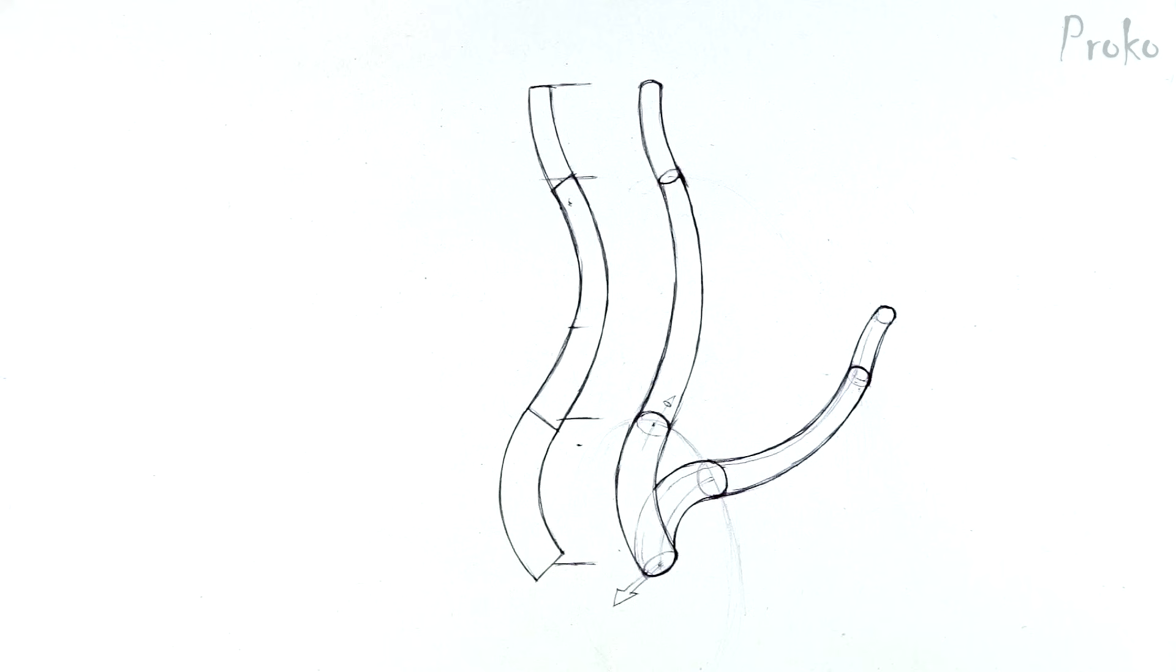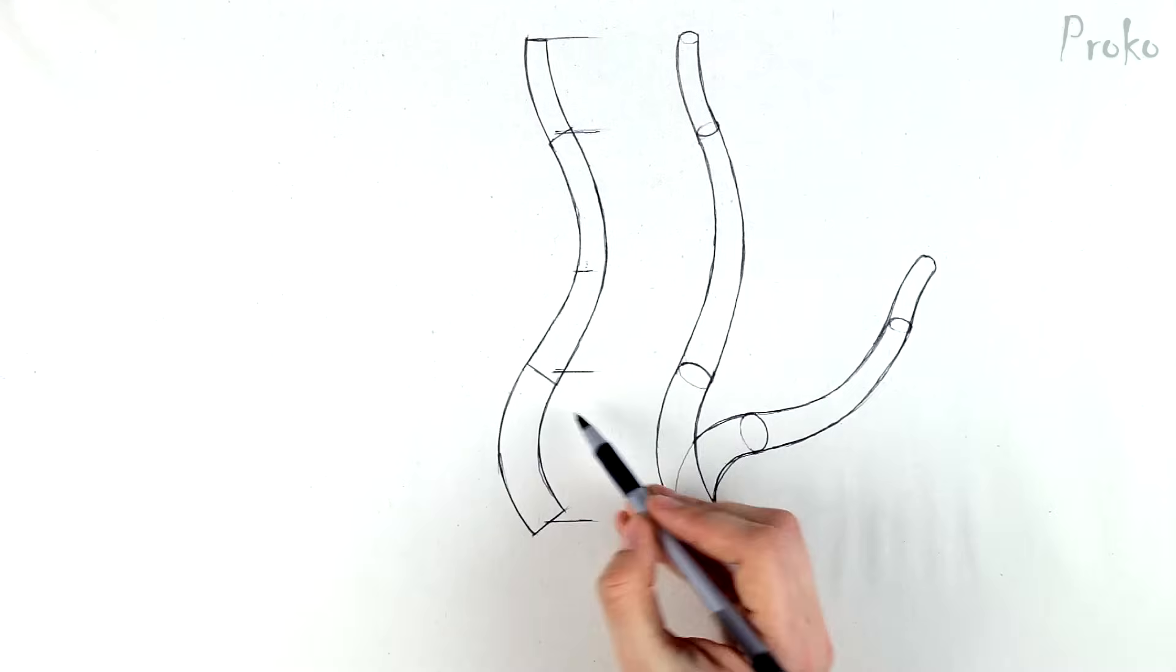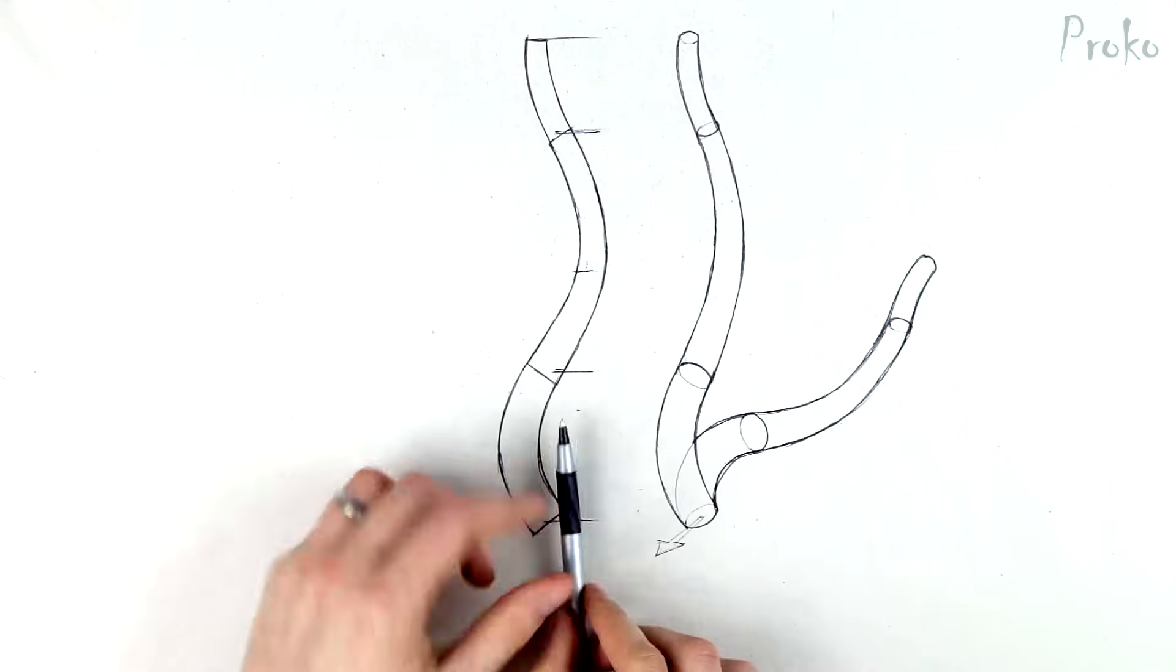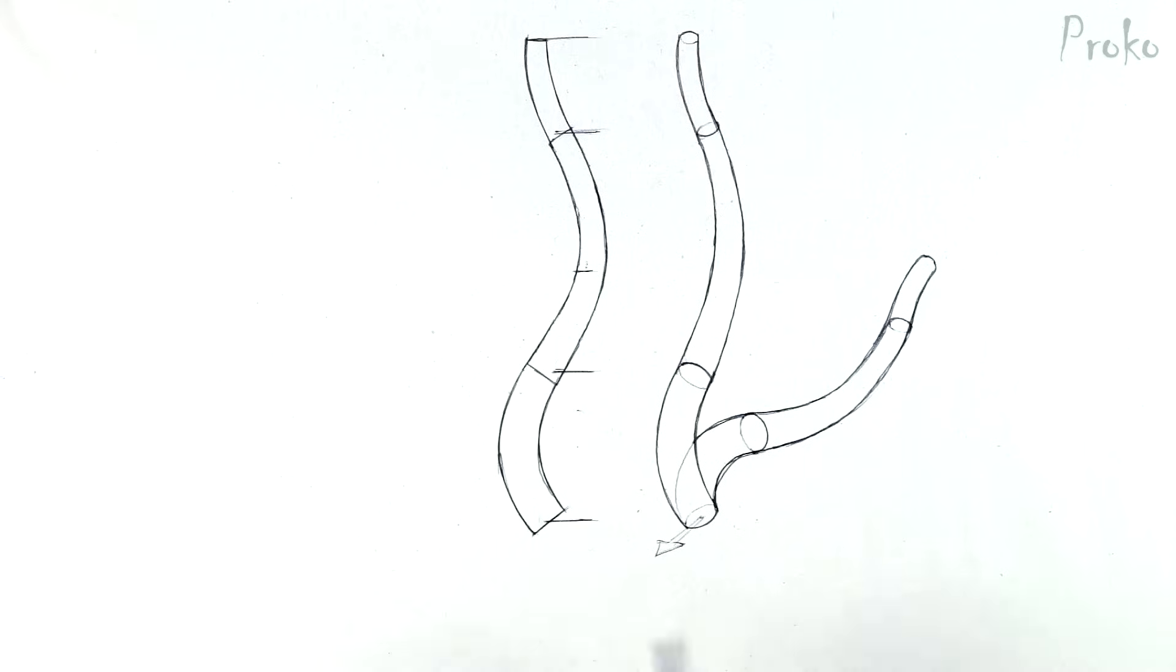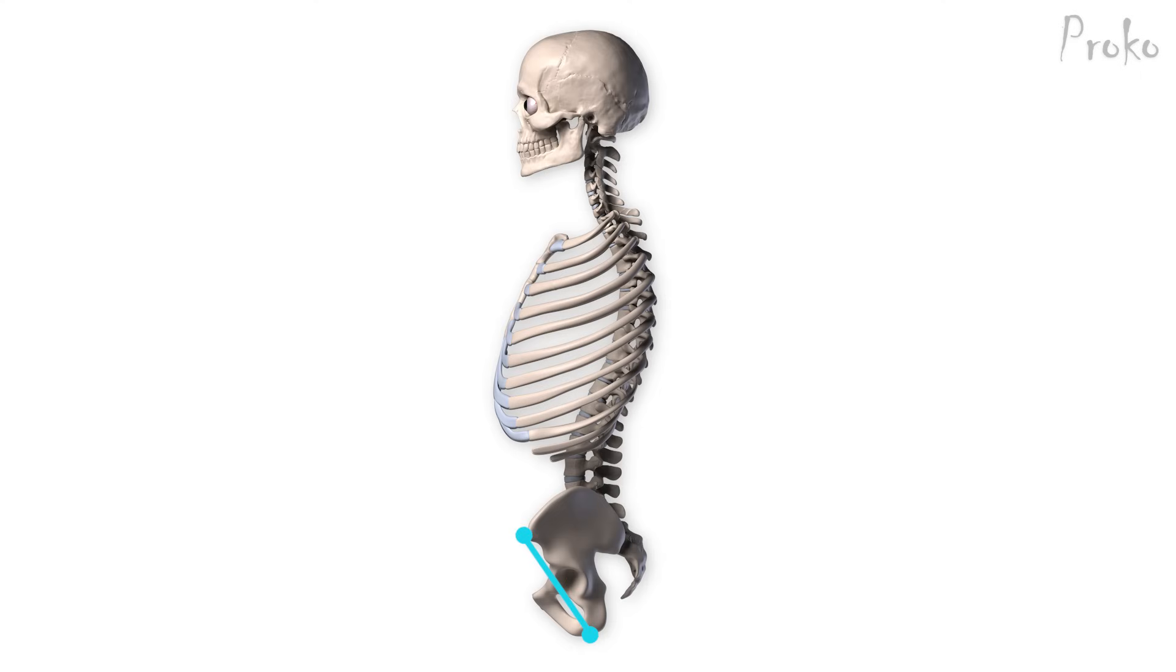Now let's add a sacrum to these spines. The height of the sacrum is about three quarters of the lumbar section. The bottom is farther back than the top. In fact, the whole pelvis has this same tilt.